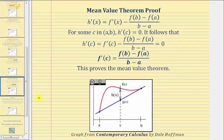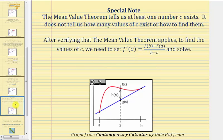Before we go, there are a couple of things we should recognize. The mean value theorem tells us at least one number c exists; however, it does not tell us how many values of c exist or how to find them. So when we use the mean value theorem, we first want to verify that it applies, and then to find the values of c we set f prime of x equal to the slope of the secant line and solve for x.